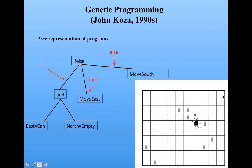Suppose Robbie is in a situation and this is his strategy. He would look at the if clause and say: is there a can to my east, and is the north of me empty? Well, there's a can to the east and the north is empty, so he would follow the first branch and move east.